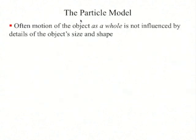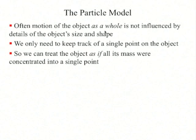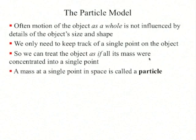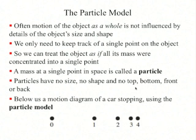The particle model. Often, the motion of an object as a whole is not influenced by little details of its size and shape. We only need to keep track of a single point, and we can treat the object as if all its mass were concentrated into a single point when looking at its motion. This is called the particle model. Particles are simple — they have no size, shape, top, bottom, front, or back. We can draw them as a dot.